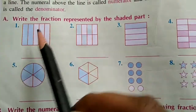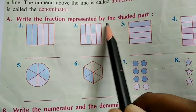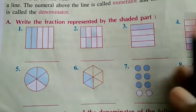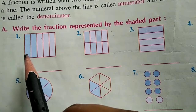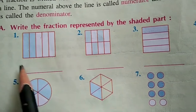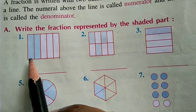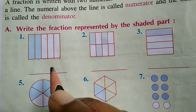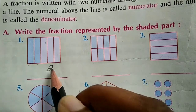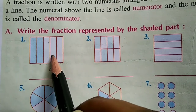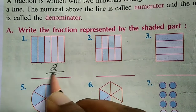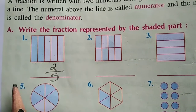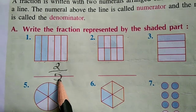Write the fraction represented by the shaded part. Shaded part fraction: 1 by 4. Five equal parts, 2 parts shaded — shaded part fraction is 2 by 5.